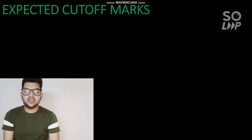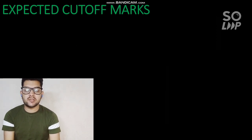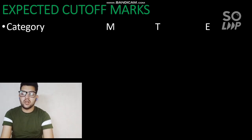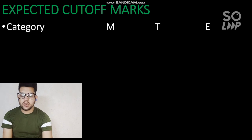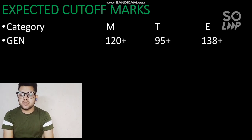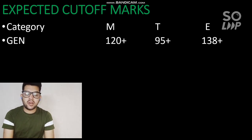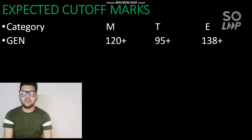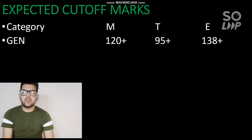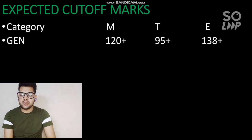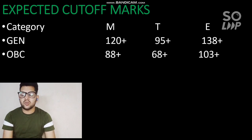Here are the expected cutoff marks you should at least score in the upcoming attempt to be eligible for JEE Advanced, category wise. For a moderate paper, General category requires 120 plus marks; for a tough paper, 95 plus marks; and for an easy paper, you may have to score 138 to 140 marks - as seen in the 25th July attempt where the paper was very easy and students got lower percentile despite good marks. For OBC, 88 plus marks for moderate paper.